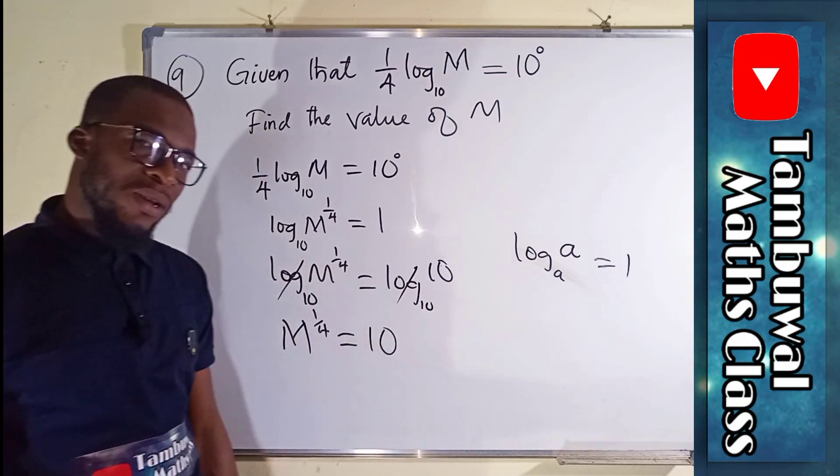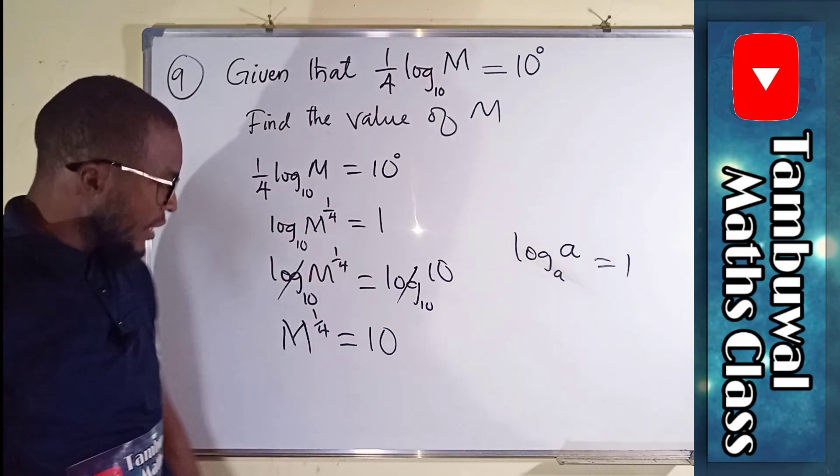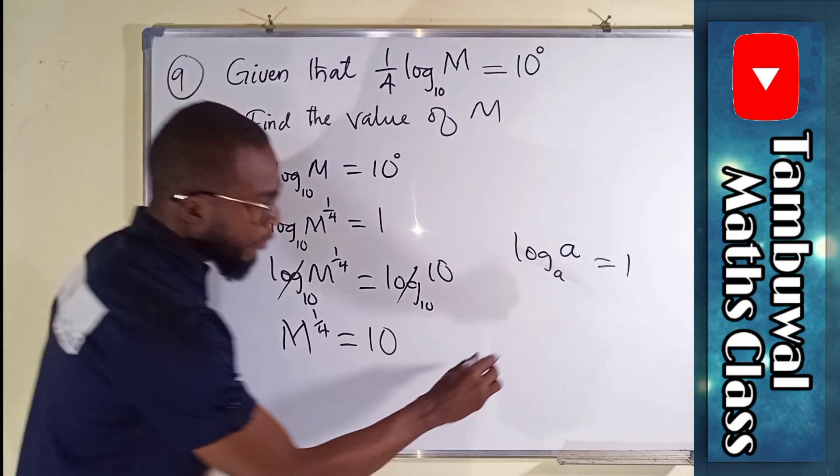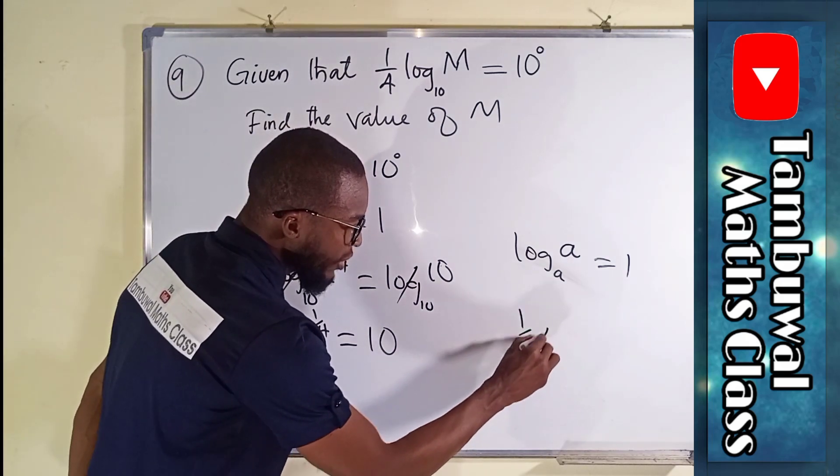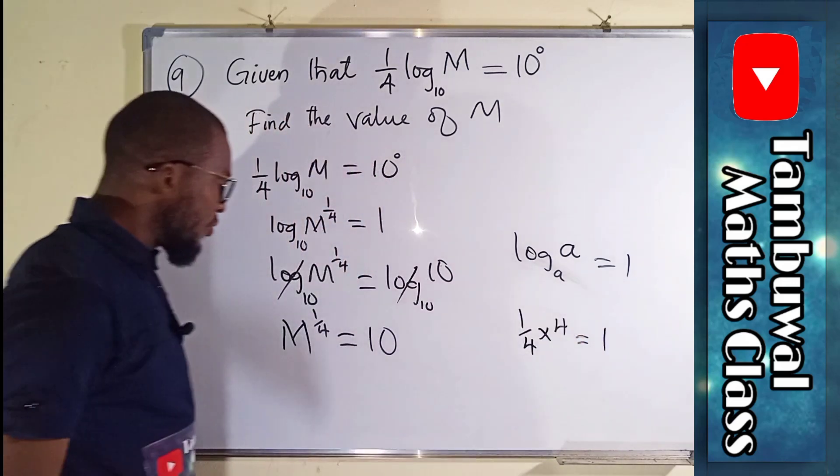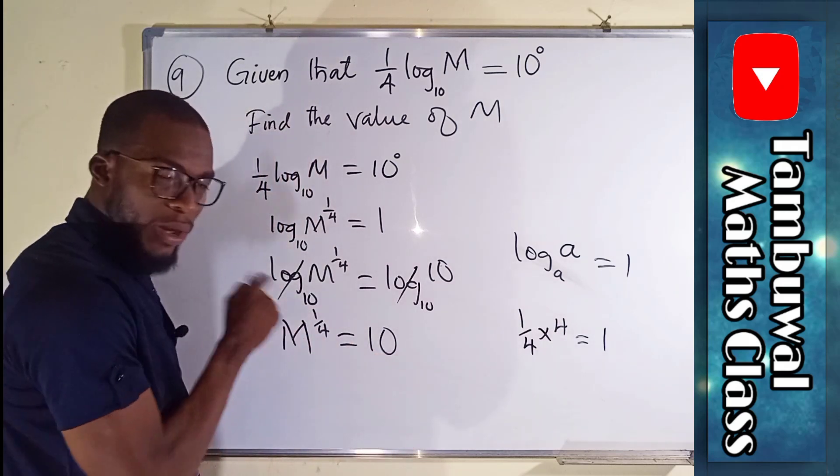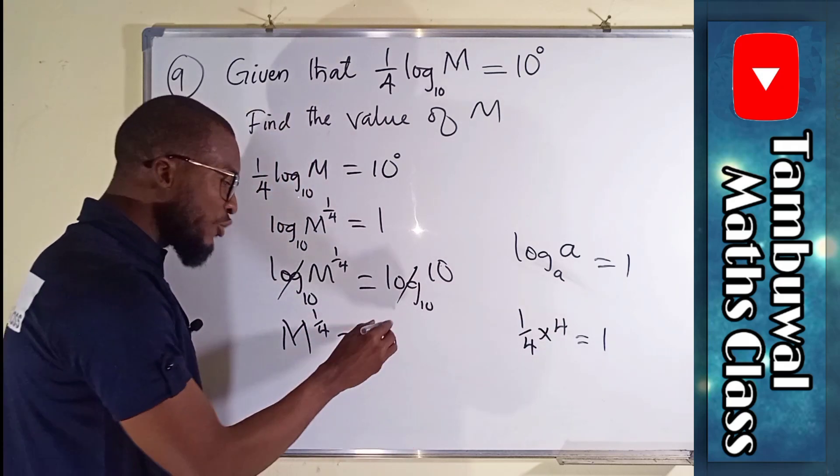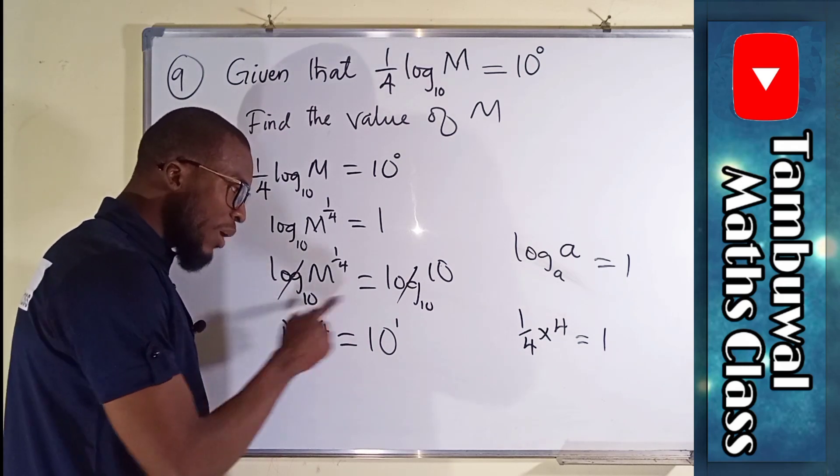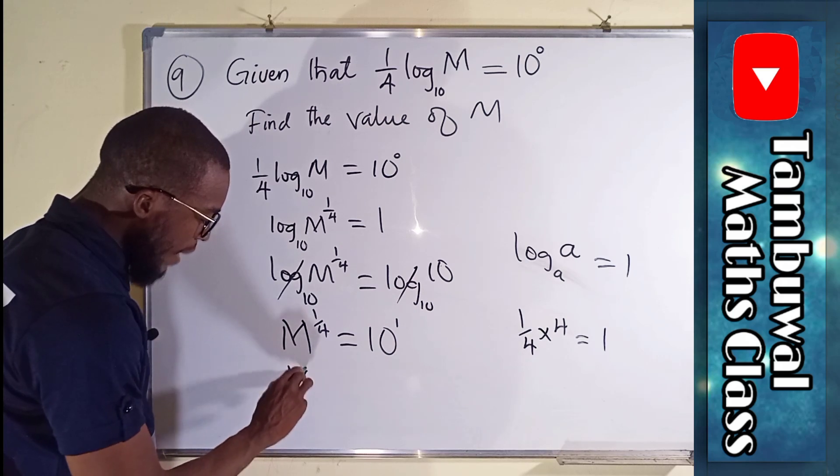Now we are free to find what is this M actually. This M has a power of 1 over 4, but 1 over 4, if multiplied by 4, it will give us 1. So we can multiply this power by 4 in order to eliminate the power at all. But naturally, any number has a power of 1. So we can multiply this power by 4 and multiply this power by 4. So we have only M here.